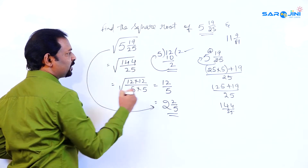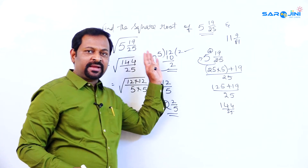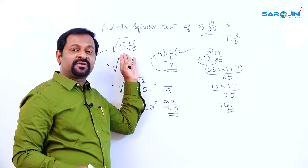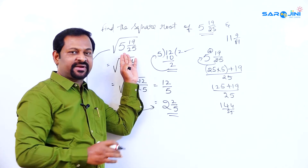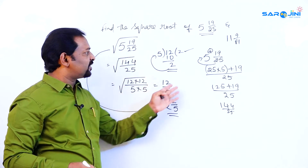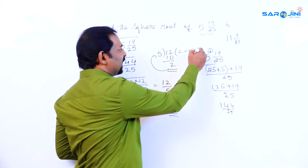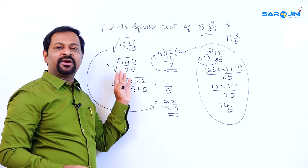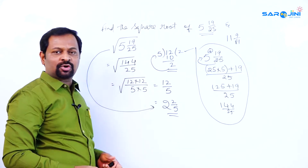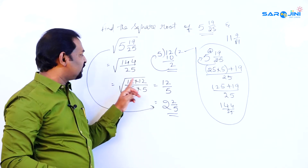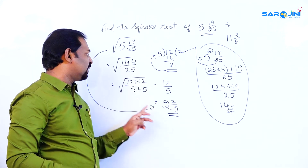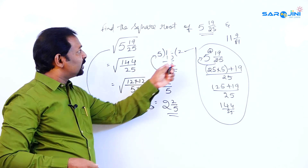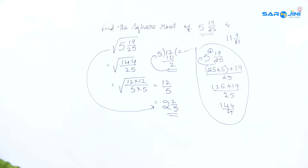So what we did: we had to find the square root of a mixed fraction. First we converted it to an improper fraction, then we took the square root of numerator and denominator separately. That is why 144 gives us 12 and 25 gives us 5, giving 12/5 as the answer.